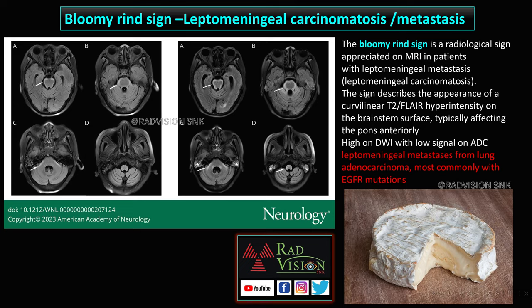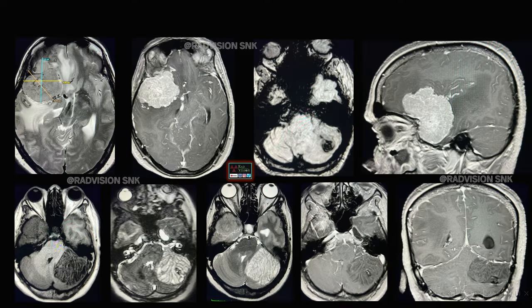It may show high signal on DWI with low ADC, and the pathogenesis can be due to either cytotoxic edema or tumor infiltration over the pons. Most commonly it is seen in leptomeningeal metastasis from lung adenocarcinoma, most commonly with EGFR mutations. Remember the blue merin sign in leptomeningeal carcinomatosis or metastasis.